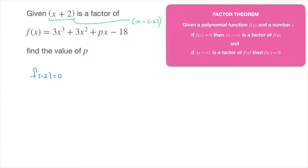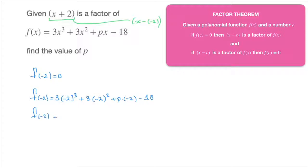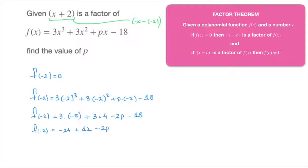So we can write f of negative 2 must equal 0. Replacing x by negative 2 inside our polynomial leads to f of negative 2 equals 3 times negative 2 cubed plus 3 times negative 2 squared plus p times negative 2 minus 18. That gives f of negative 2 equals 3 times negative 8, plus 3 times 4, plus p times negative 2, so that's negative 2p, minus 18.